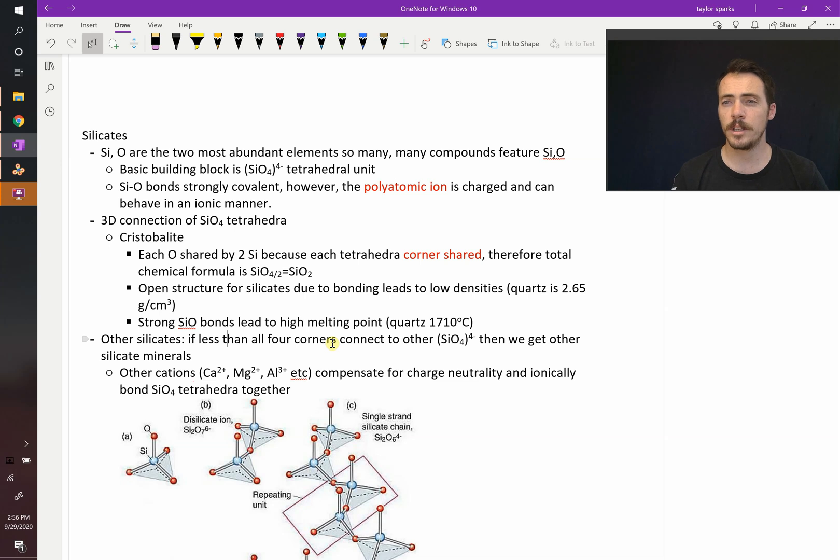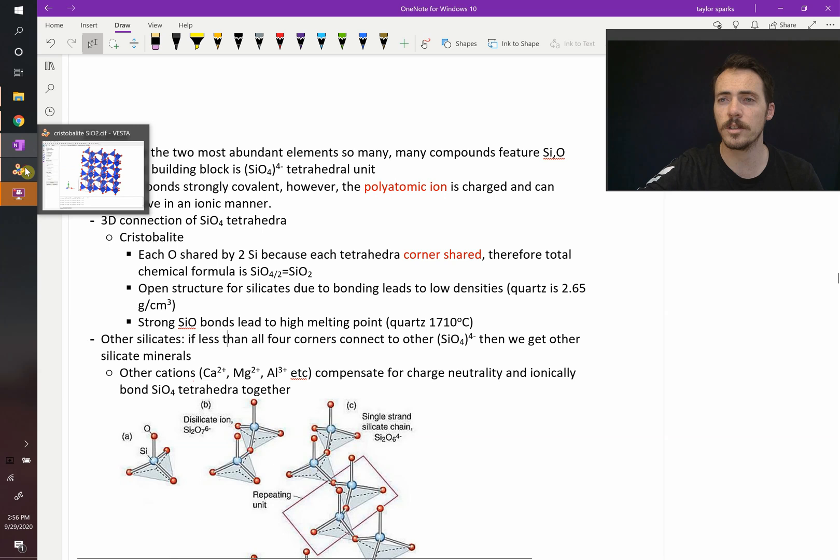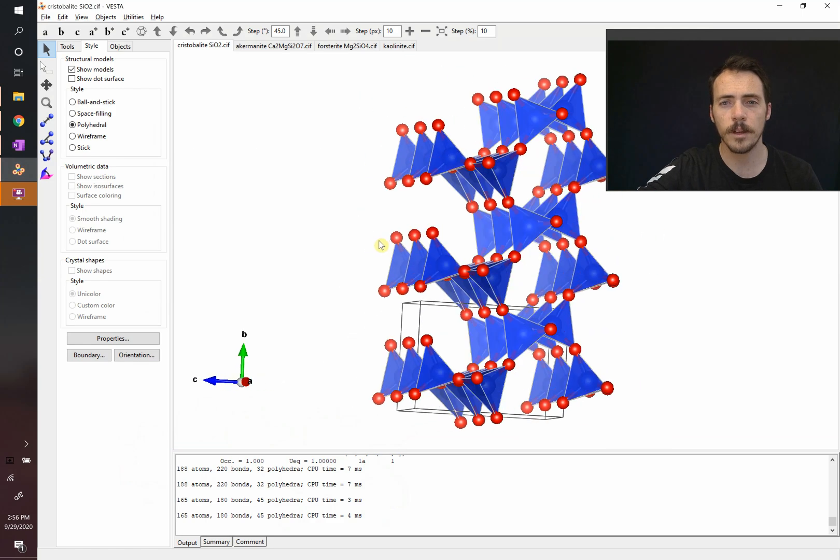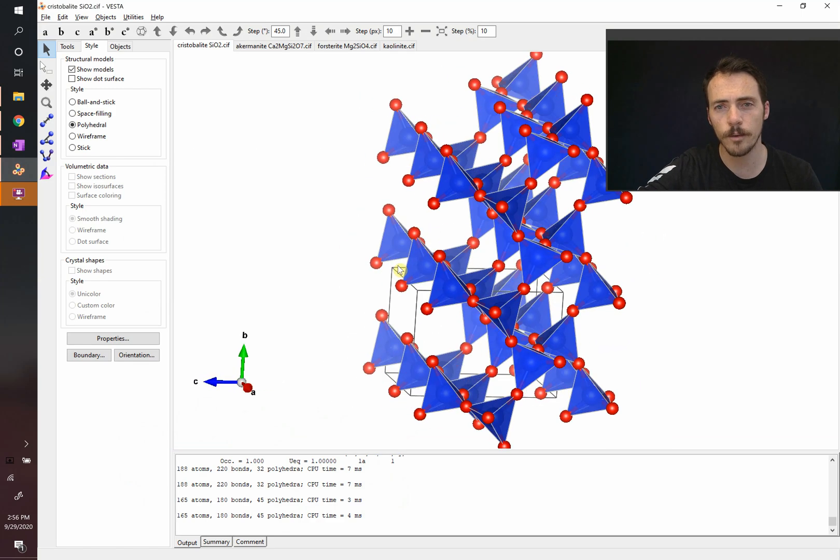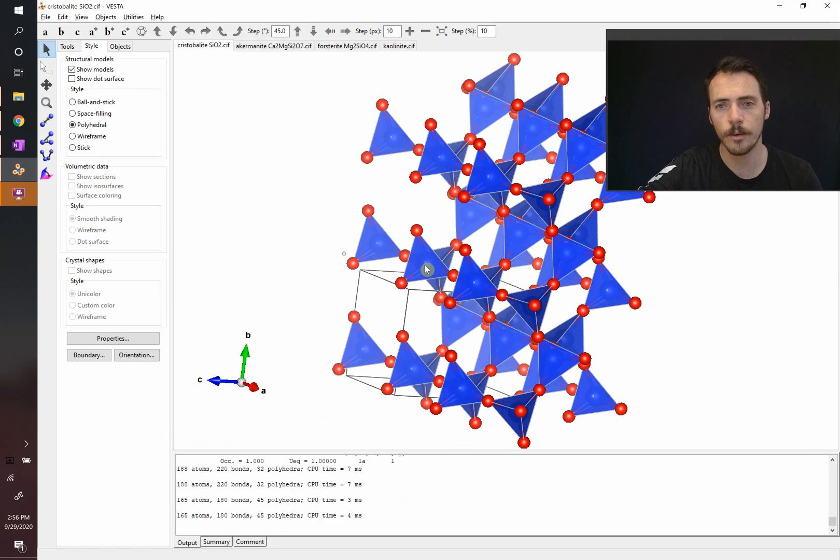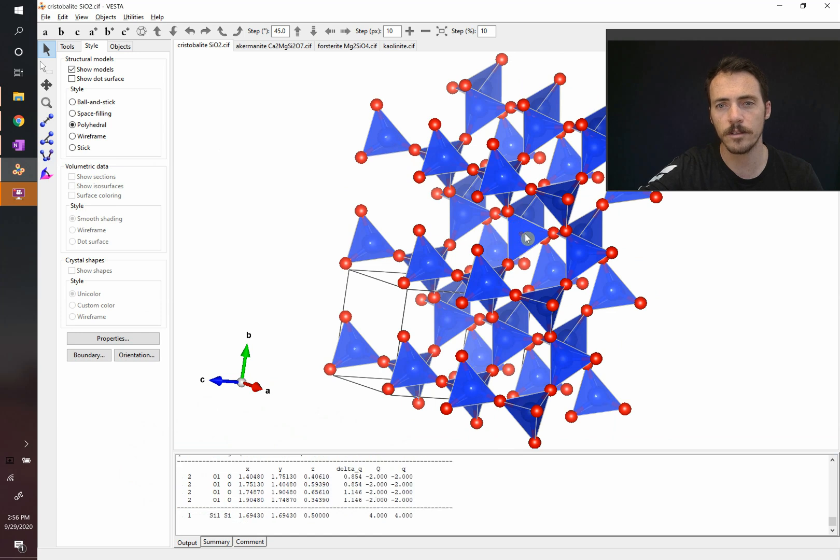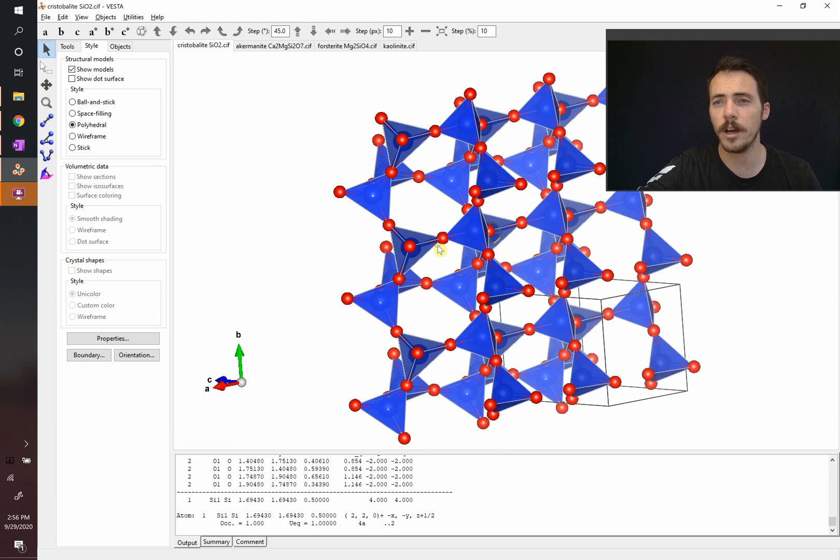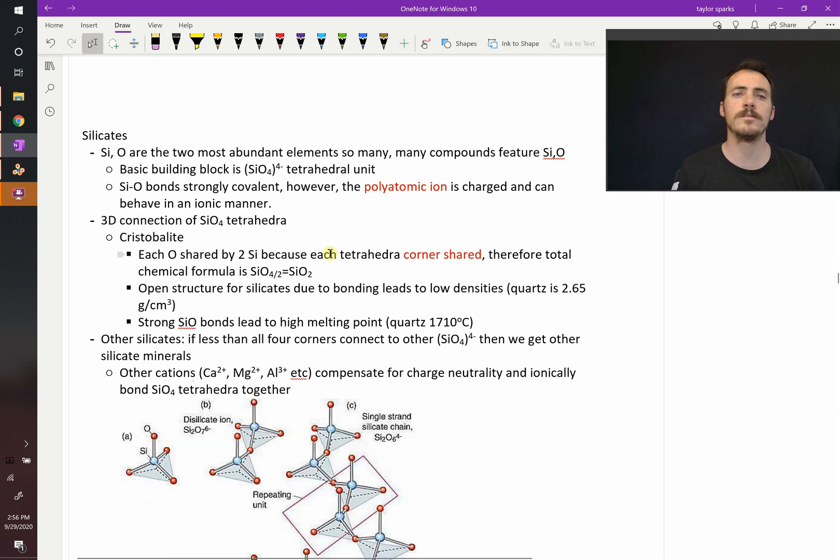These polyhedra, these SiO4 tetrahedral units can be put together in lots of different ways. They can all be in a three-dimensional connection. For example, the structure cristobolite is a three-dimensionally connected SiO4 unit. You can see that all of these SiO4 units are connected, all of their four corners are connected to another SiO4 unit. That leads to each oxygen being shared by two silica, since they're corner shared.